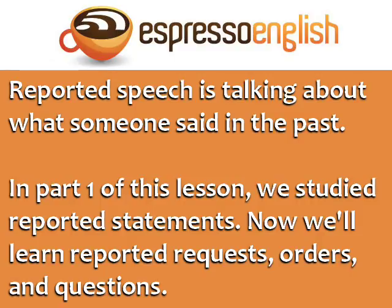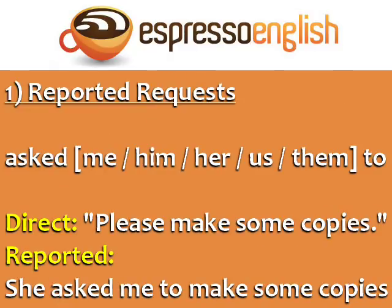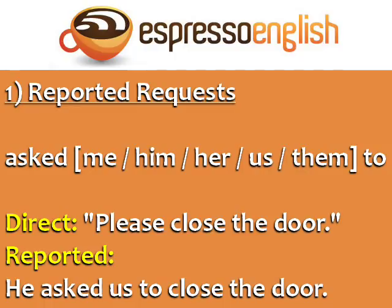For reported requests, use the structure: asked me, him, her, us, or them to. For example — Direct: 'Please make some copies.' Reported: 'She asked me to make some copies.' Direct: 'Please close the door.' Reported: 'He asked us to close the door.' In the case of reported requests, the main verb does not change.